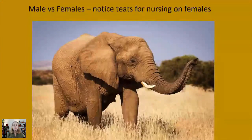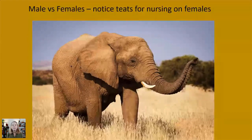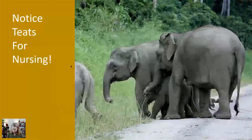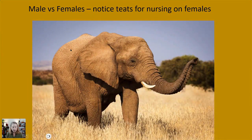Moving on to male versus females: the African savannah elephant is the largest, heaviest terrestrial mammal, getting up to 12 feet high and up to 4,000 pounds. In the females, they have mammary glands under the front arms, just like in humans. Here's a picture I took in Borneo of a family of Bornean pygmy elephants — more closely related to Asian elephants — and you can see the mother's right mammary gland or teat.